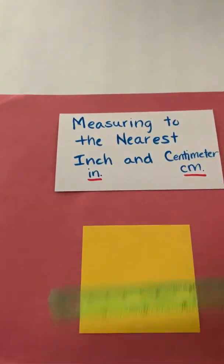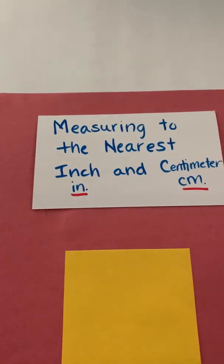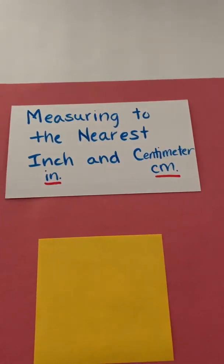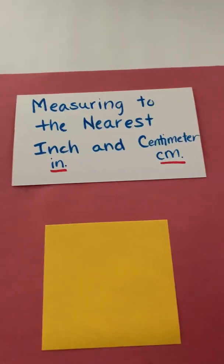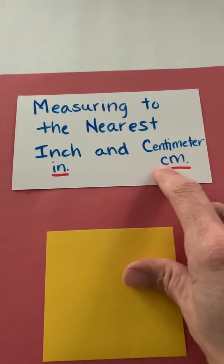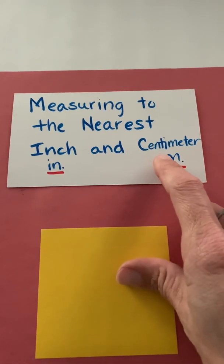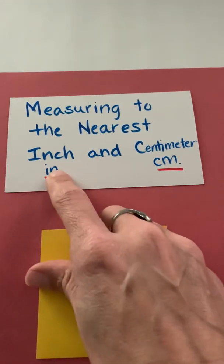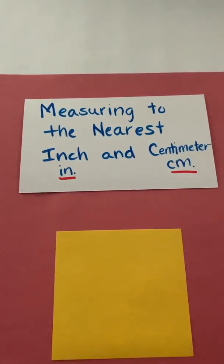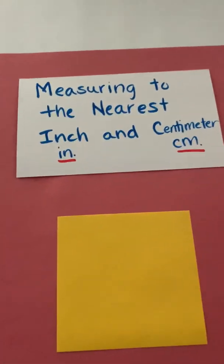So now you will practice reviewing how to measure objects or lines to the nearest inch or centimeter on your own. Focus too on how many inches versus how many centimeters it takes to measure an object. And you learned earlier in the year that it's going to take more centimeters than inches for an object that's the same. That's because centimeters are smaller.